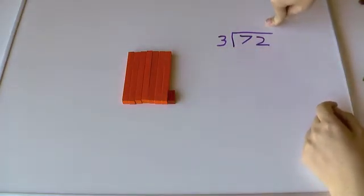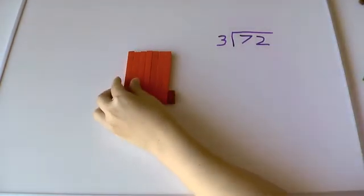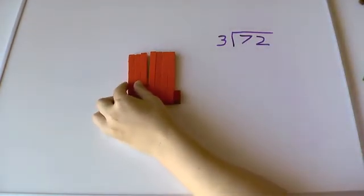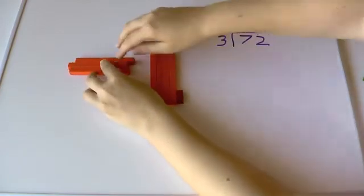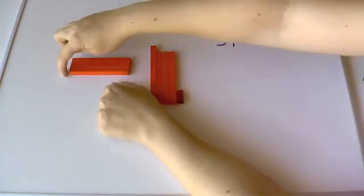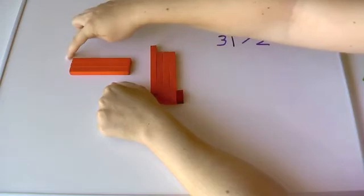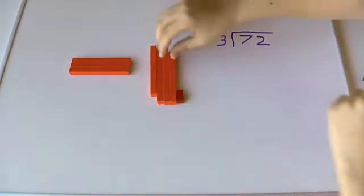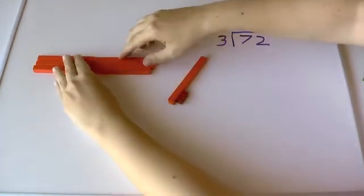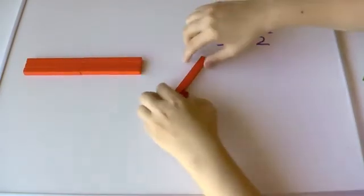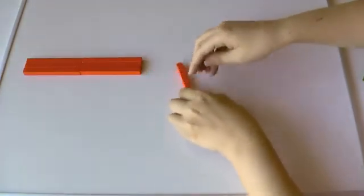So the first and easiest way to do that is see if we can use our tens. So if I go like that, I've made a rectangle with three on one side, right? And ten on the other. Can I do it again? Yes, I can. Can I do it again? Nope. Don't have enough.